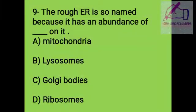Question 9: The rough endoplasmic reticulum is so named because it has evidence of these on it: A. Mitochondria, B. Lysosome, C. Golgi vesicles, D. Ribosomes. The right answer is D, ribosomes.